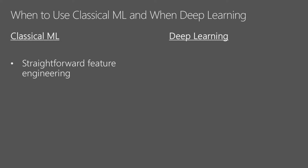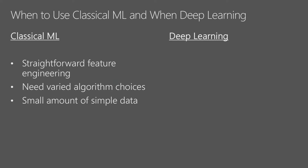Another reason to use classical machine learning over deep learning is when we need varied algorithm choices. There are a lot of different algorithms in the classical machine learning space, and they're quite different from each other. With small, simple data, we might use things like random forest, decision trees, or support vector machines — and those work pretty well.